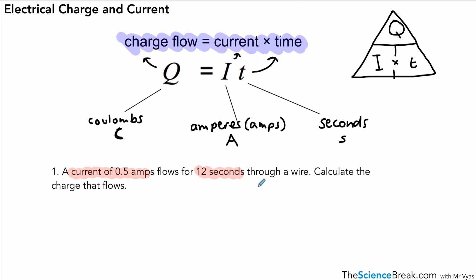So we've got our current, we've got our time in seconds, and we need to calculate the charge. That's a very simple case of just using our equation that we've just written down. So that's Q equals IT. We then just put in the numbers. We substitute in the numbers.